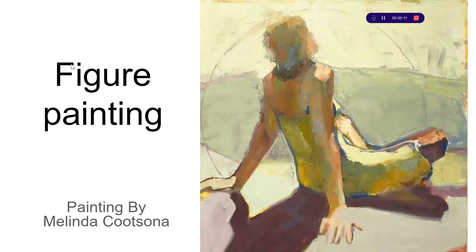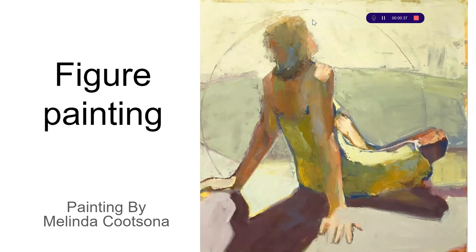We're going to carry on with the gestural drawing and move on into using paint. We don't want to focus on individual body parts — we want to see the figure as a whole. Looking at this example, it's a very simple painting but really effective. The most detail is around the hand, but the head and face have no detail at all, yet we can read it really well as a figure.